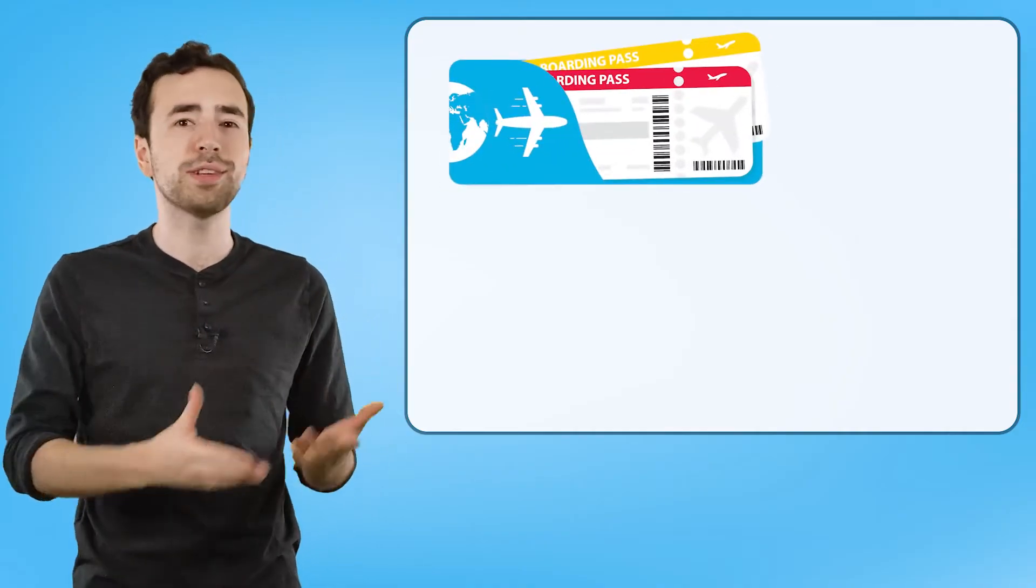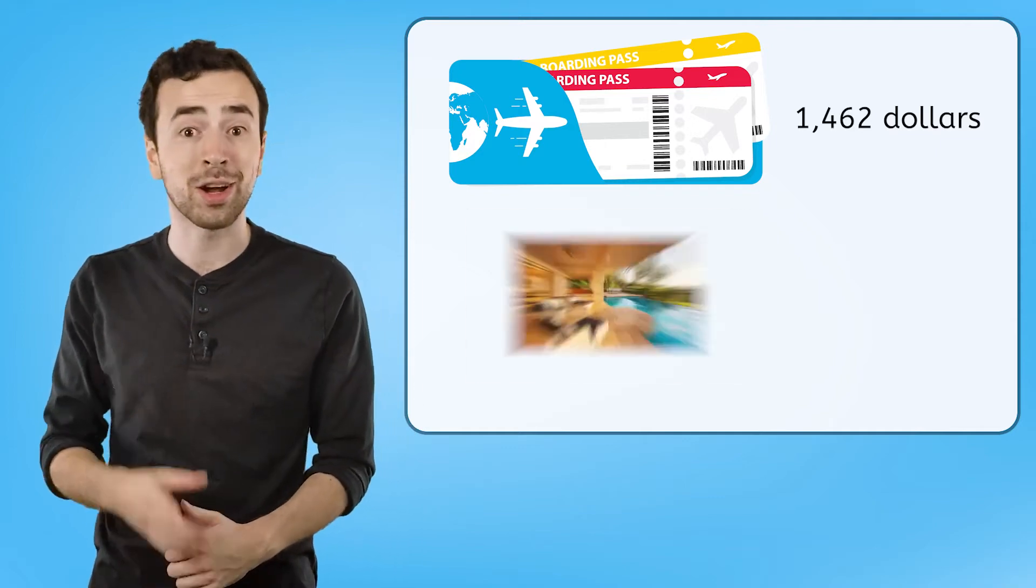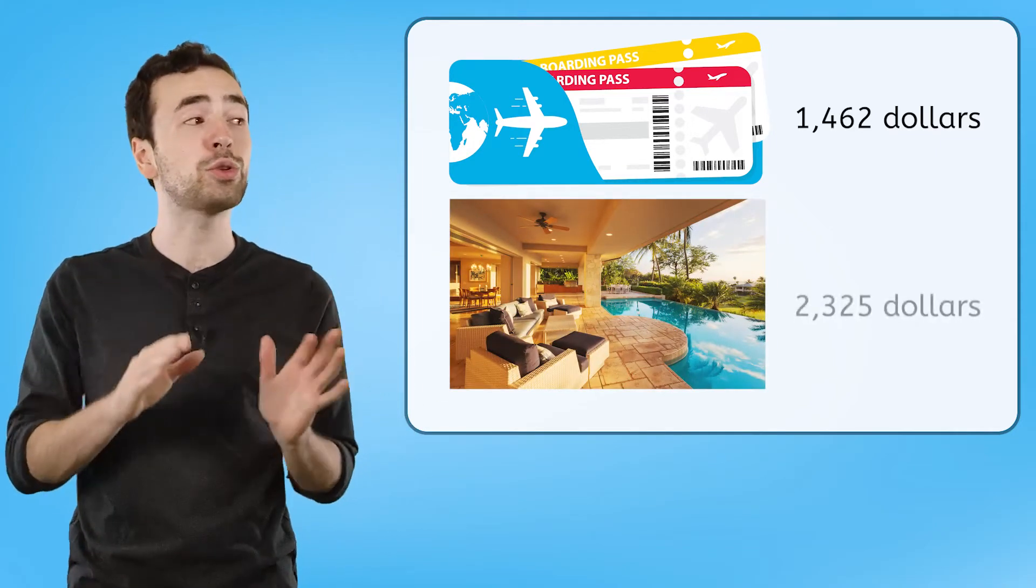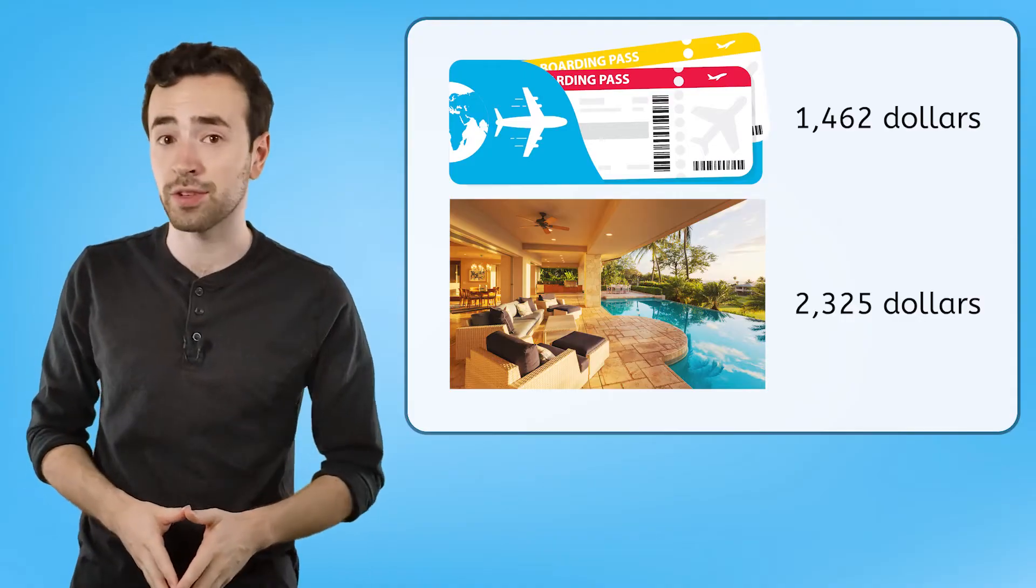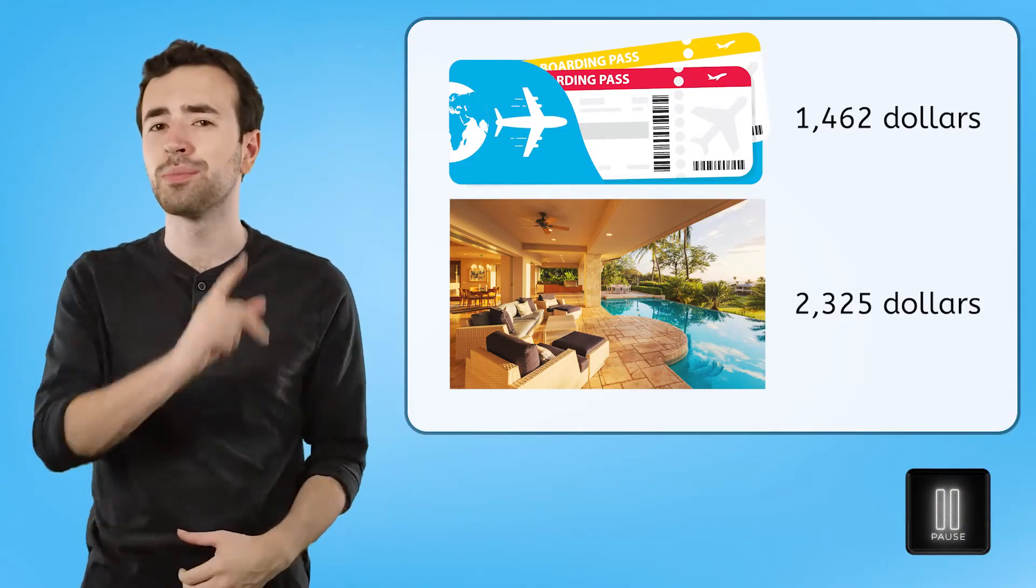For my dream vacation, I found a flight that will get me to Australia for $1,462, and a really neat place to stay for $2,325. Pause the video here to create a vertical addition problem with these numbers.